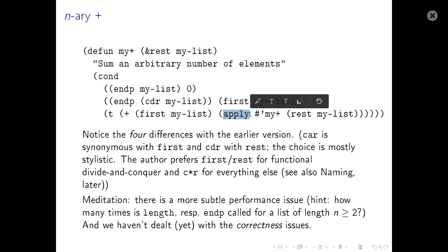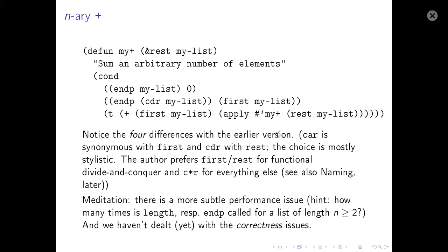The corollary is that I must use apply, because now &rest my-list is itself a list and I want to call my-plus on it. If I pass the list to my-plus directly, it only gets a single argument — namely the list. Apply deconstructs that list, puts the my-plus function at the head of it, and evaluates that. We'll see more examples of how apply works — it is one of the power tools for functional programming in Lisp.